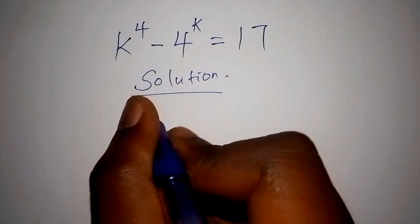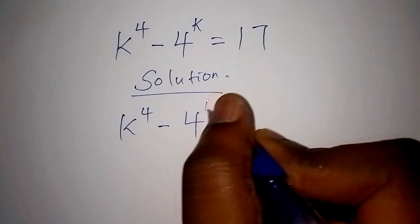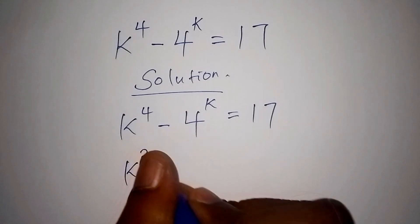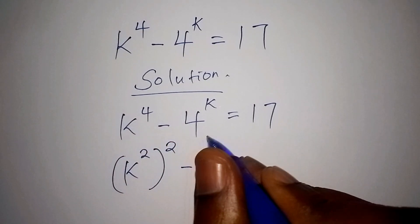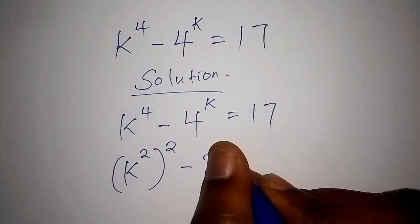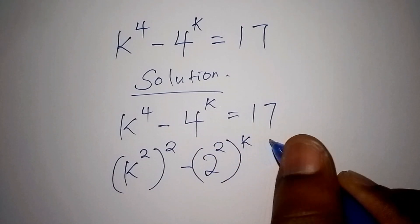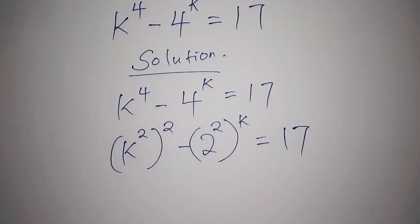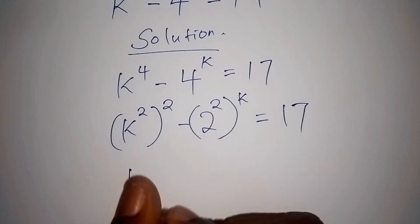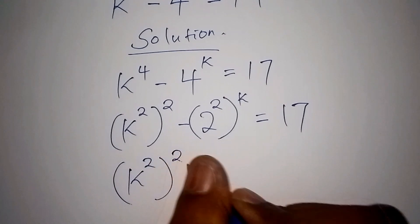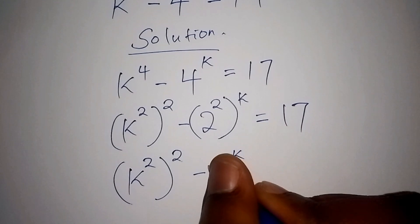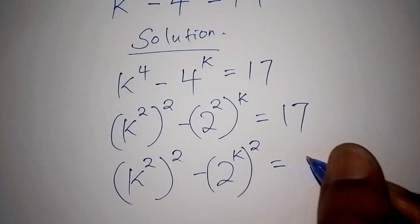We have k to the power of 4, minus 4 to the power of k, equals 17. We can rewrite it by having k to the power of 4 written as k squared, in bracket, to the power of 2. Then minus 4 to the power of k can also be written as 2 squared, then to the bracket k, to the power of k, equals 17.